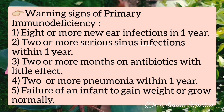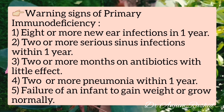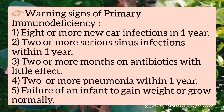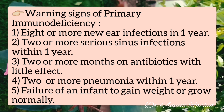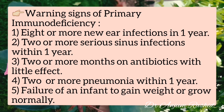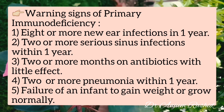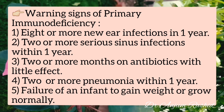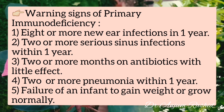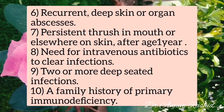Warning signs one through four are: eight or more new ear infections in one year; two or more serious sinus infections within one year; two or more months on antibiotics with little effect; and two or more pneumonias within one year.